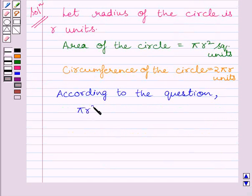πR² = 2πR. Now, dividing both sides of this expression by πR, we get R = 2.